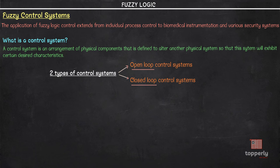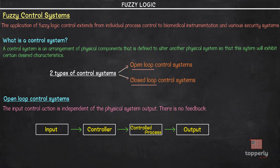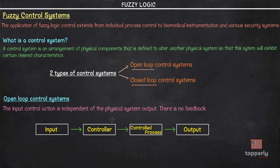We have open loop control systems and closed loop control systems. In open loop control systems, the input control action will be independent of the physical system output. This means that the output does not affect the control action of the entire system — there is no feedback in this type of system. An open loop control system has an input, a controller, a control process, and an output. We use a controller to obtain a satisfactory or desired response.